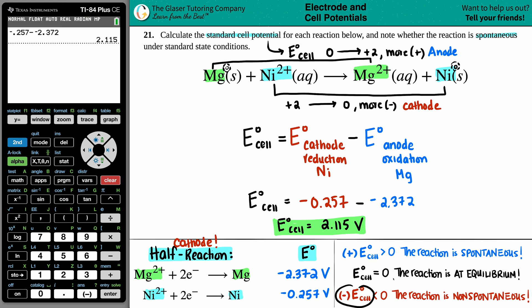But if you have a negative E cell, less than zero, the reaction is non-spontaneous. And since here, 2.115, it's a positive value, we know that this is going to be a spontaneous reaction. There's no additional energy that is needed to make this oxidation reduction reaction happen.